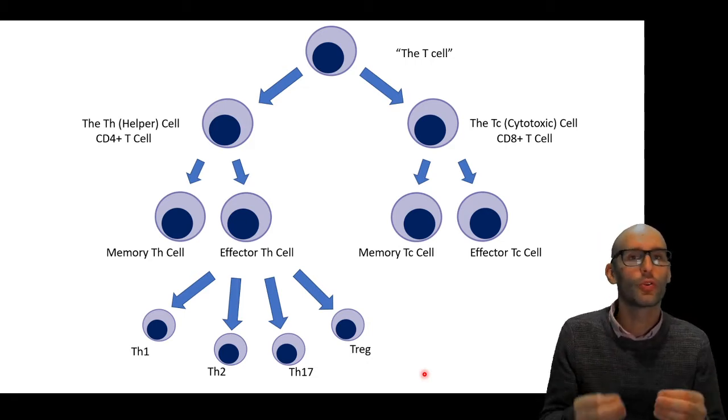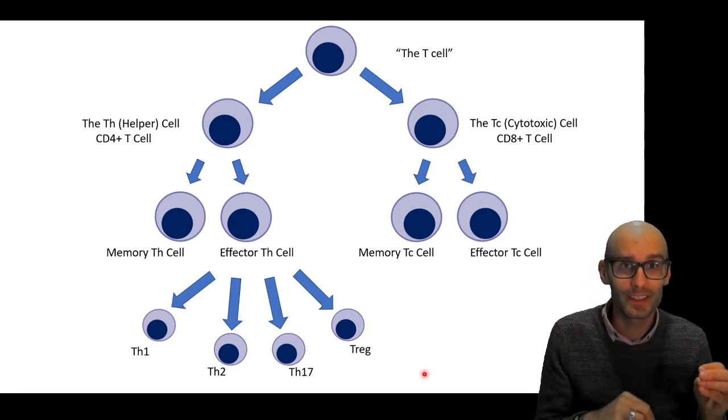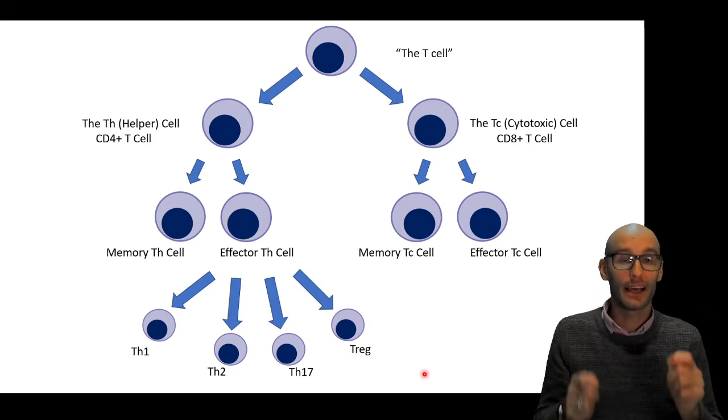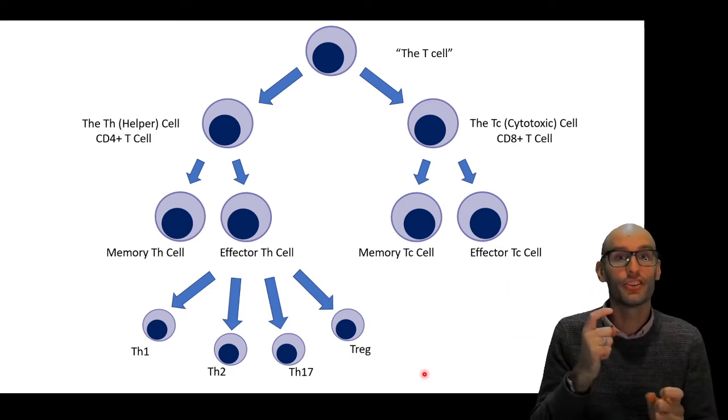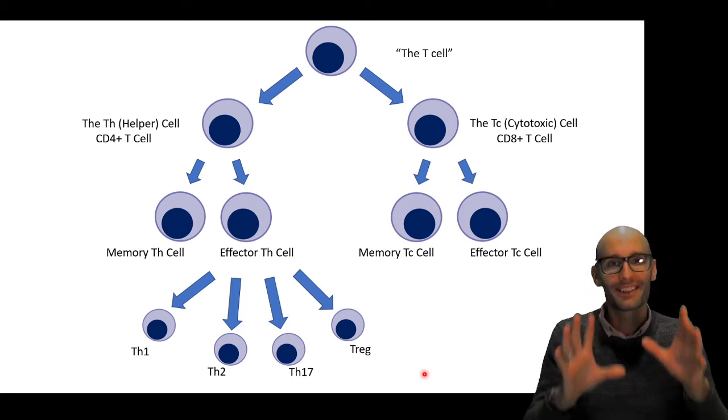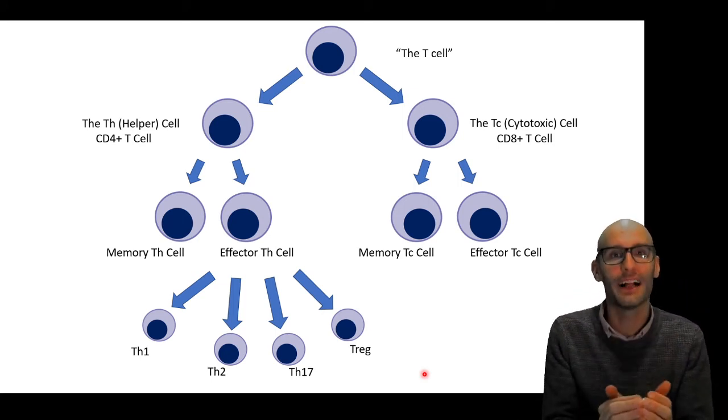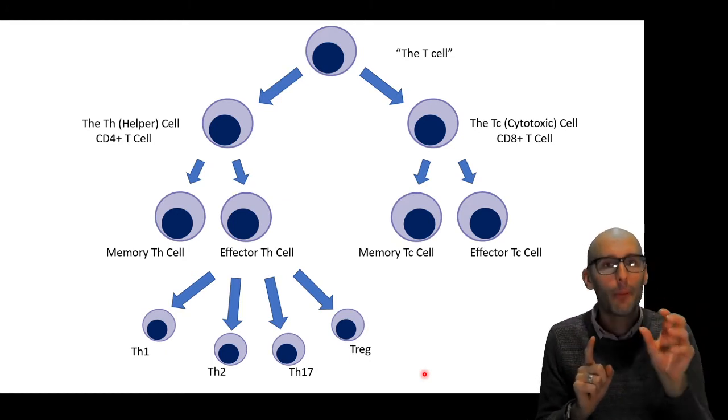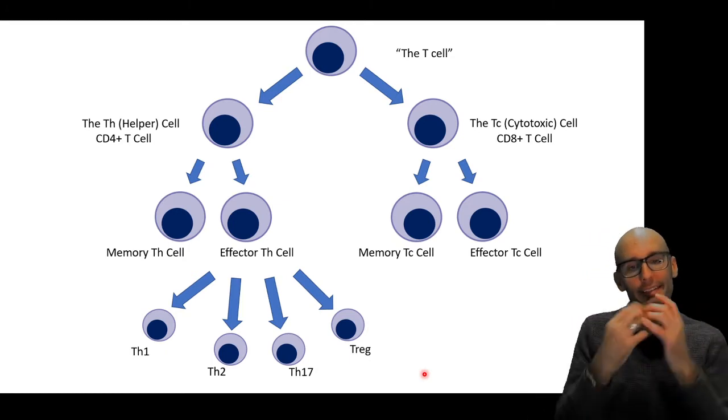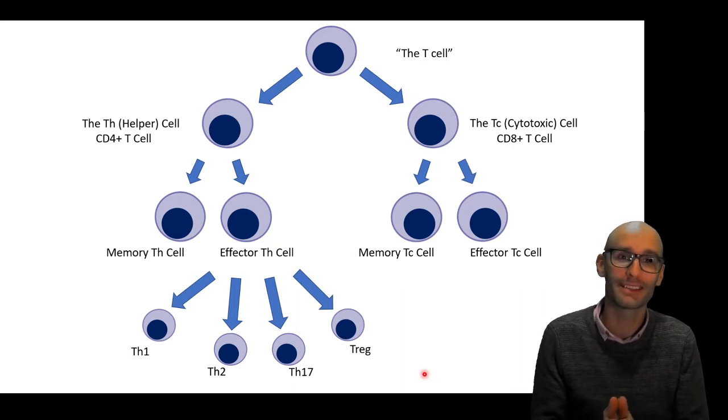But since then, a new technology has come along called single cell RNA sequencing. The RNA sequencing allows us to evaluate exactly which of the 27,000 genes are turned off and turned on inside each individual cell. We can also see not just off or on, but how dialed up is each gene.